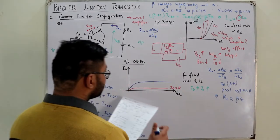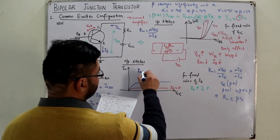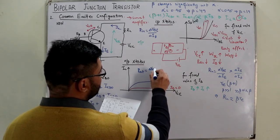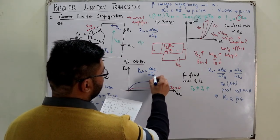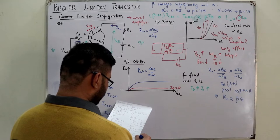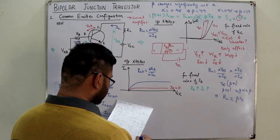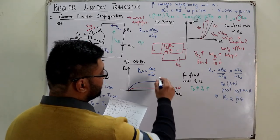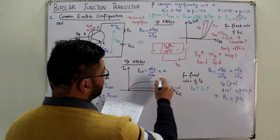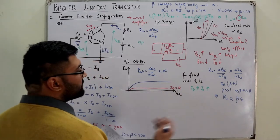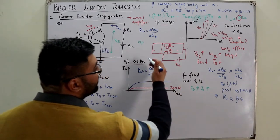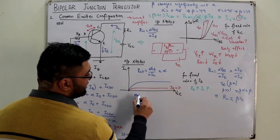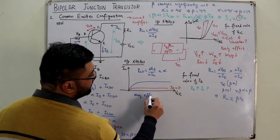The output resistance R_out = ΔVCE/ΔIC, which is approximately infinite because the slope of the IC–VCE curve is approximately zero when the Early effect is ignored. So IC ≈ β·IB independent of VCE.